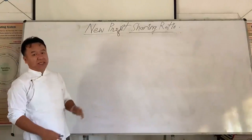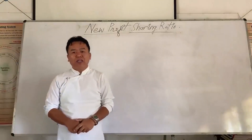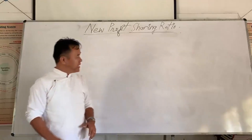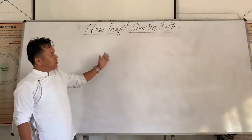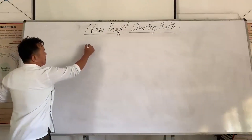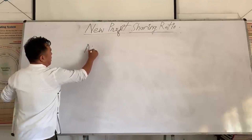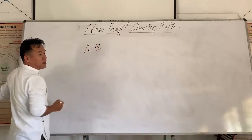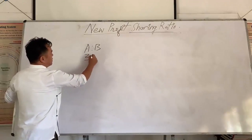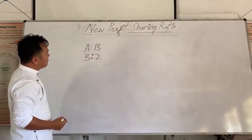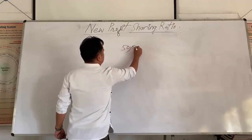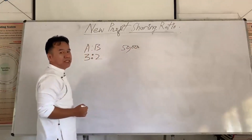Now the second point is: why do we calculate new profit sharing ratio? For this I am going to explain with a very simple example. Suppose A and B are partners sharing profit in the ratio of 3 to 2, and the firm has a profit of rupees 50,000 during the year.